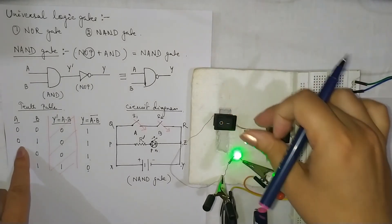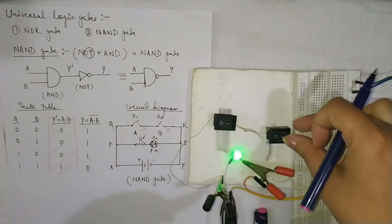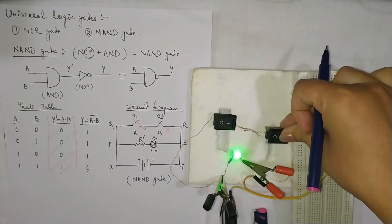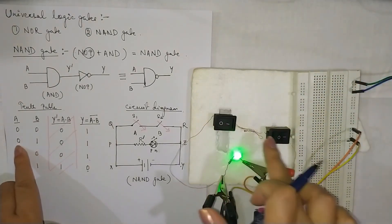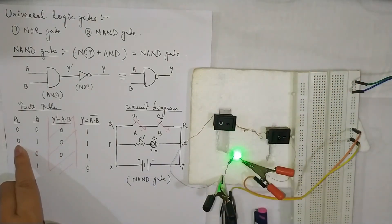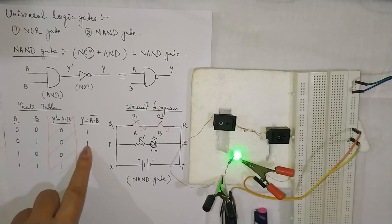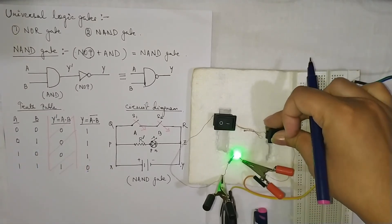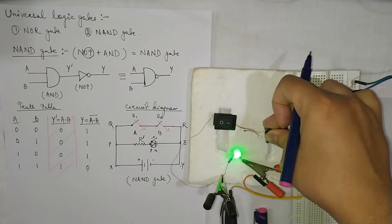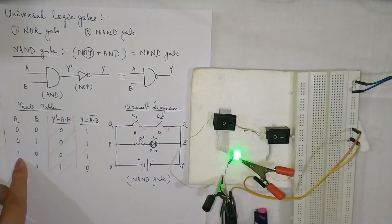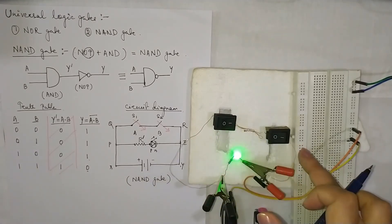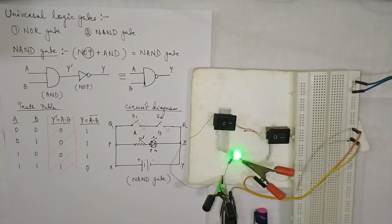Now make it 0, 1. Press this one switch. You see: this is 0, this one is 1 — output is high, LED is glowing. Now do the reverse: 1, 0. The second switch is 1 and the first is 0. The output is still glowing — LED is on.